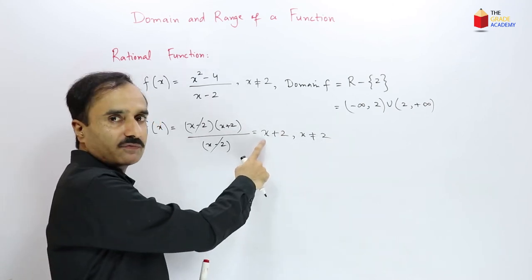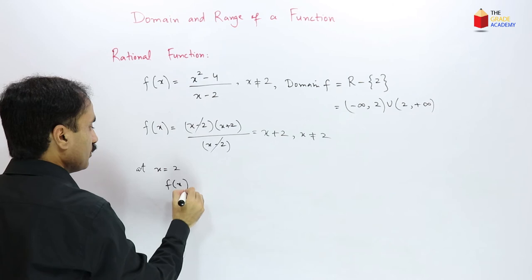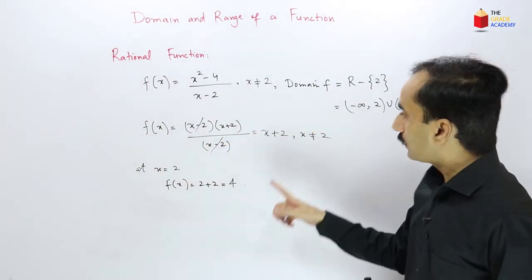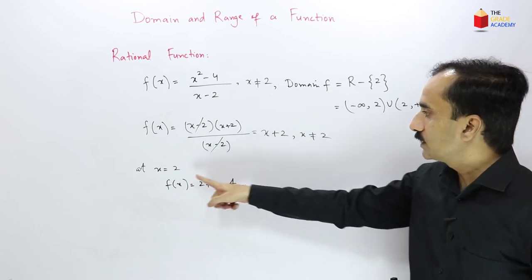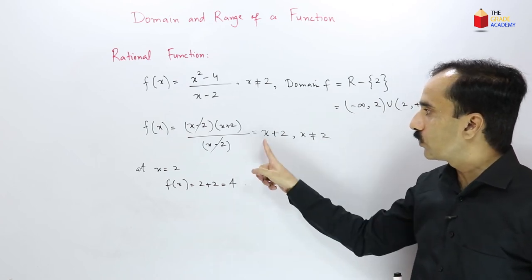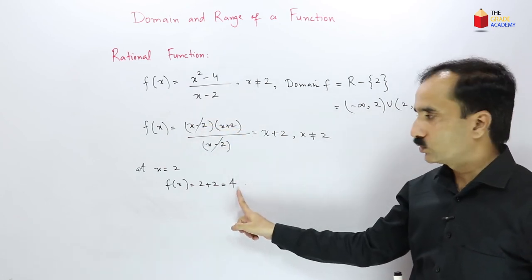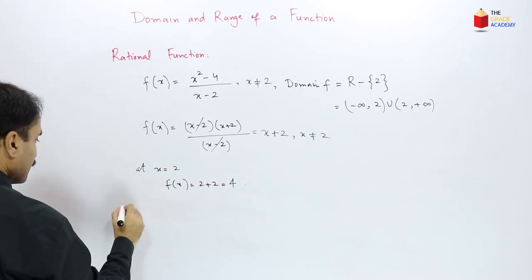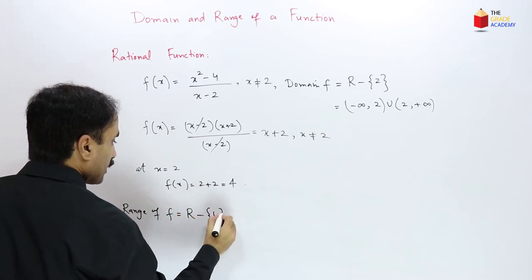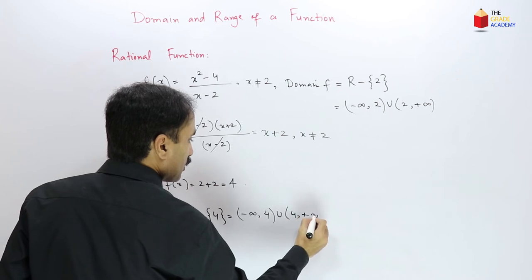If we plug in x = 2 into the simplified form x + 2, we get 4. But since x = 2 is not an allowed input, the output 4 is never achieved. So the range of this function is all real numbers except 4, written as (−∞, 4) union (4, +∞).